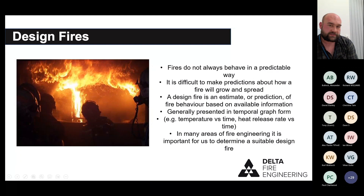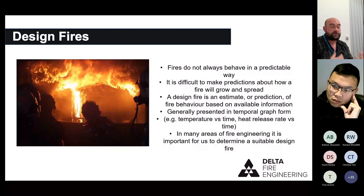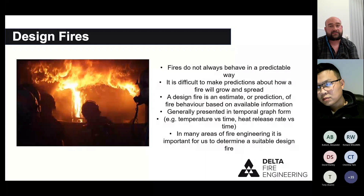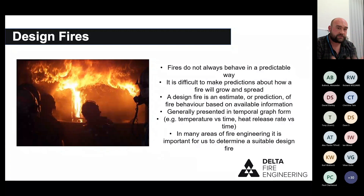That idealized smooth bell curve is exactly what it is — idealized. Fires are very difficult to predict. If you set up the exact same rig twice — say two comparable sofas — and set fire to each, they'll burn very differently because there are just so many variables involved in the growth stage of a fire. This makes it very difficult for engineers, academics, and researchers to draw that graph with any real accuracy of what will happen in a real fire.